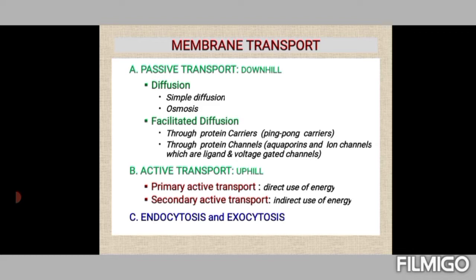Active transport is an uphill type of transport — molecules are transported from a region of lower concentration to a region of higher concentration. Energy in the form of ATP is involved. It may be primary active transport, which directly uses energy, or secondary active transport, which indirectly uses energy. Endocytosis and exocytosis involve transport of larger molecules with greater energy expenditure.